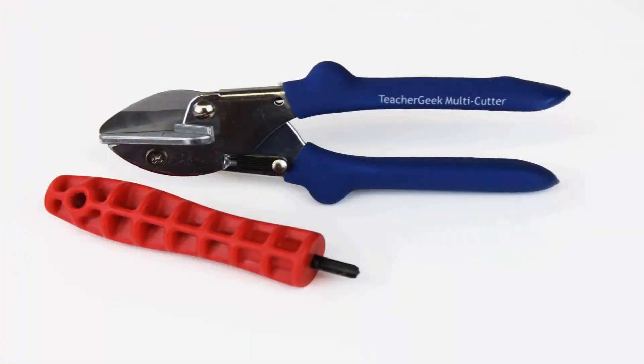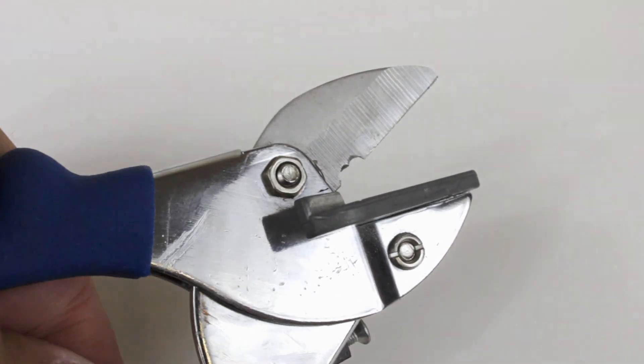The TeacherGeek construction system allows you to build almost any mechanism you can imagine using two simple tools. The dowels and connector strips can be easily cut to size using our TeacherGeek multi-cutter. But don't use the multi-cutter to cut metal because you'll ruin the blade.